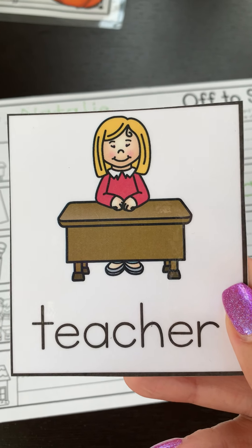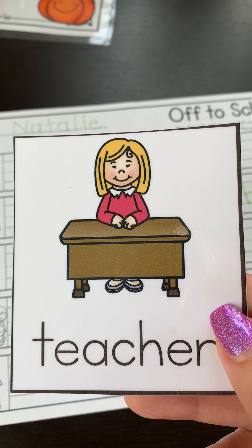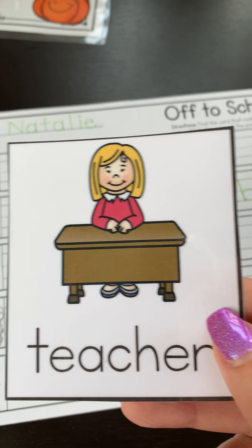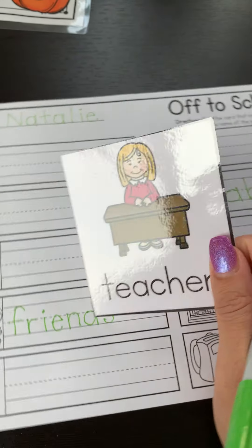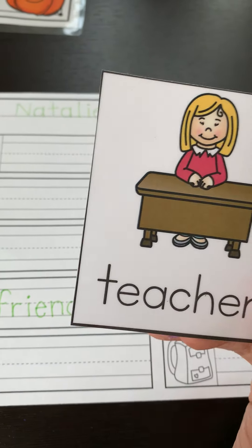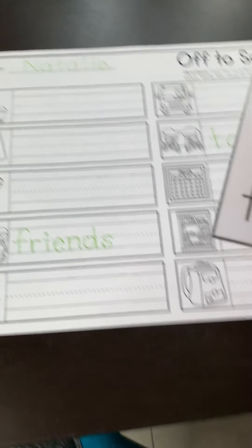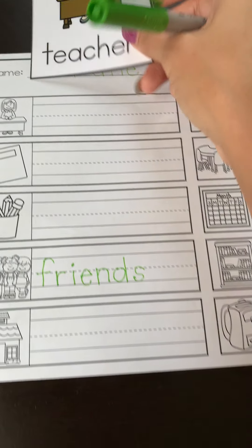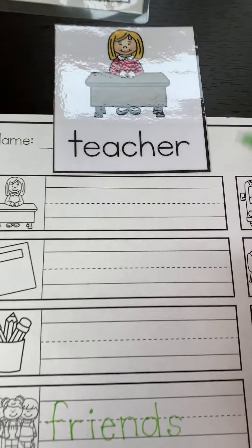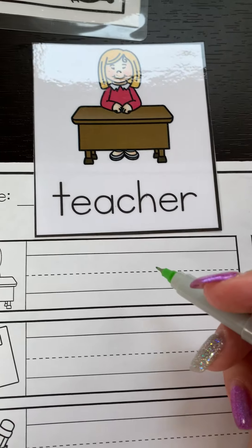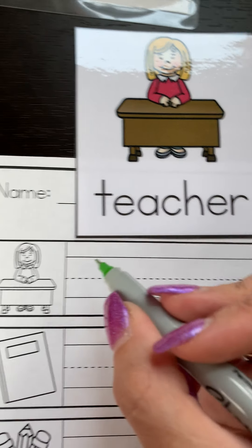Teacher. Now Mrs. Turner doesn't have blonde hair like that — Mrs. Turner has brown hair. But the teacher sometimes sits behind a desk, sometimes not very often. Teacher. T is a skyline letter.